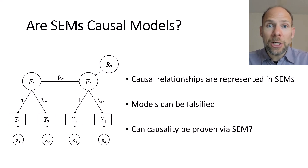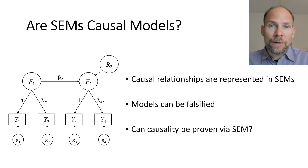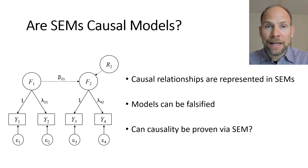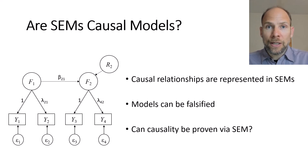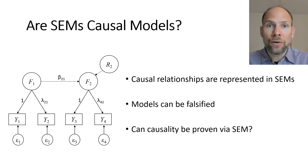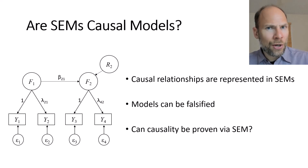The next question is: can we prove a causal relationship that we hypothesize by obtaining a well-fitting model? Say we fit a model where F1 is hypothesized to be the cause of F2, and this model fits well — it has a non-significant chi-square and does not have to be rejected. Can we then conclude that F1 is the cause of F2?